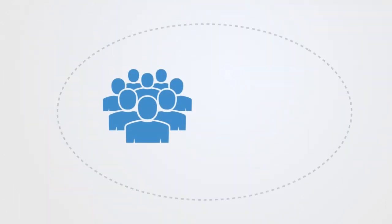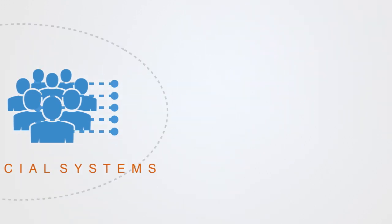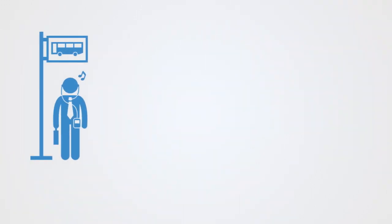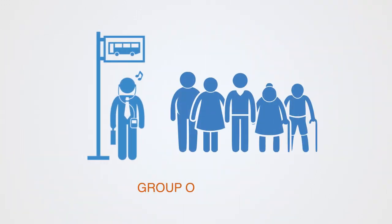A social system is then a set of actors and the relations or ties between them. Again, we could contrast a social system with a simple set of people, such as a group of people waiting for a bus — they are simply a collection of unassociated individuals.